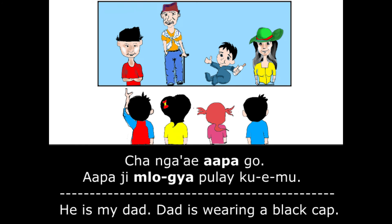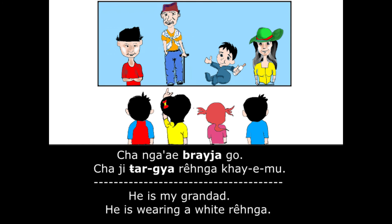Family Members and Colors in Gurung Language. Cho Ngai Apago. Apaji Mrogya Pule Kwe Mu. He is my dad. Dad is wearing a black hat. Cho Ngai Bheja Go. Cho Ji Targya Renga Khe Mu. He is my granddad. He is wearing a white renga.